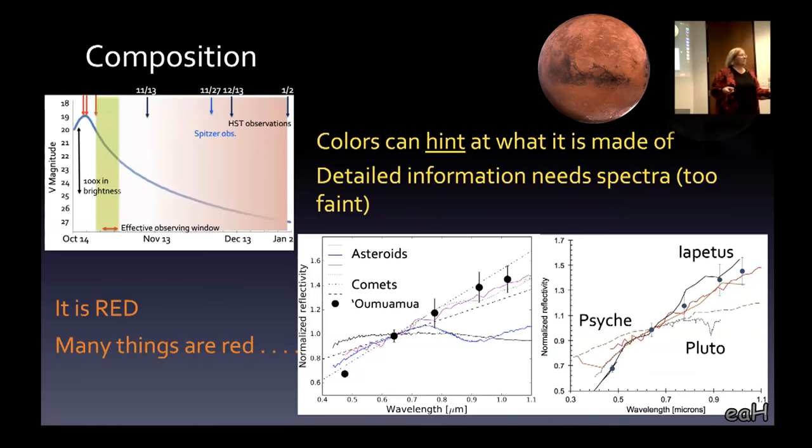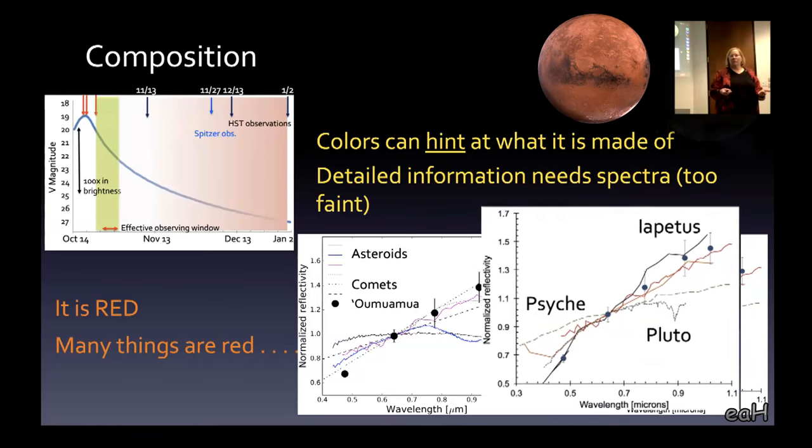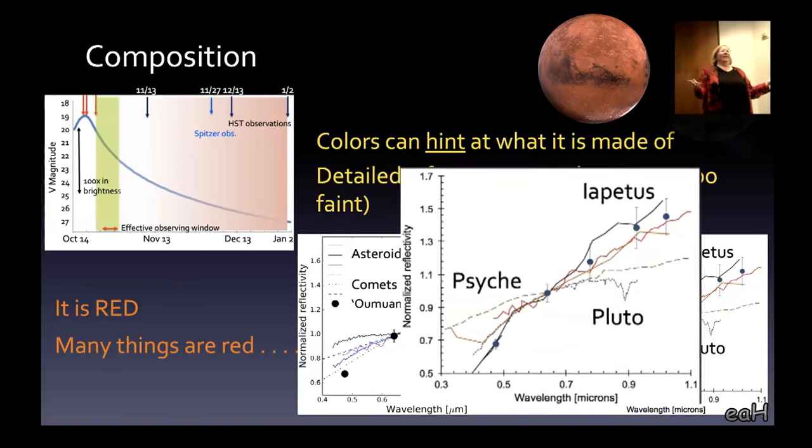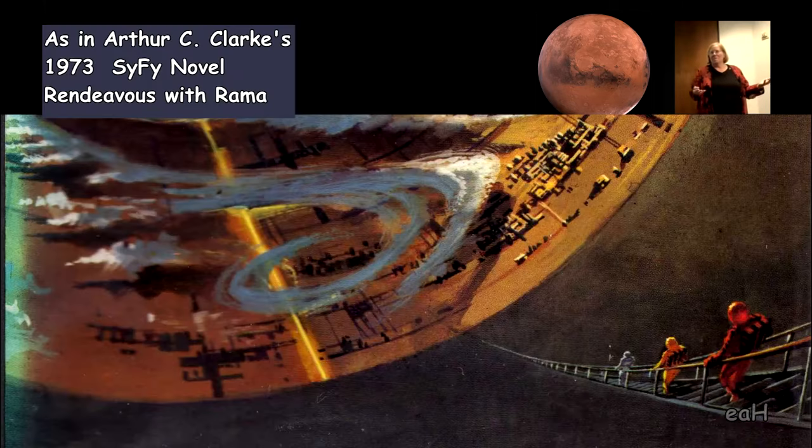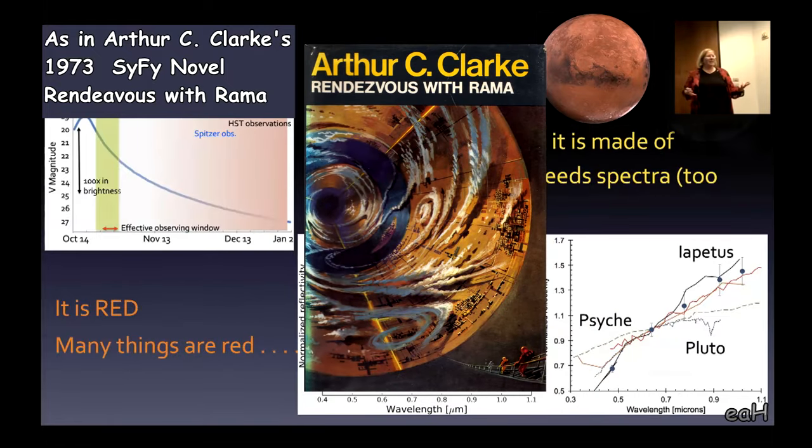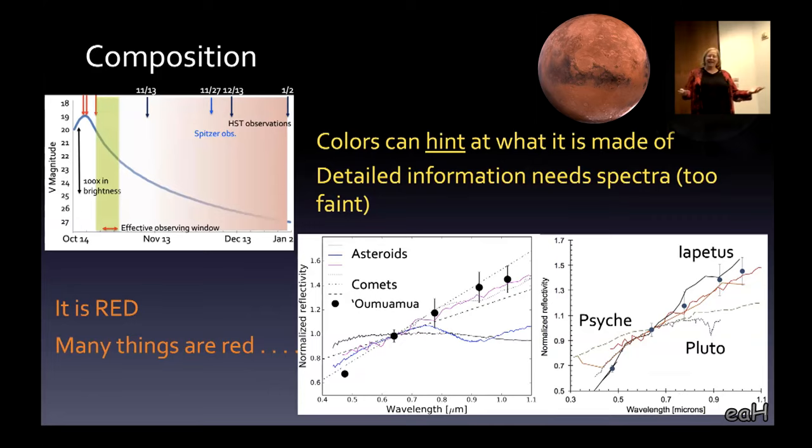But red doesn't mean we've understood what the chemistry is. Mars is red because of all the iron in the surface. We have other things in the solar system that are red. This shows some reflectances of a metallic asteroid called Psyche, just pure metal. It's red. Pluto is red because of some organics. So we know it's red, but we really don't know the composition. I did look up the reflectivity of titanium, and that's also red.